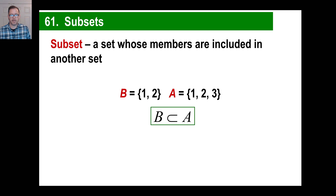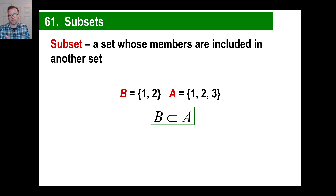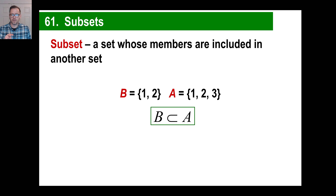So now we can say B is a subset of A. In other words, the members of set B are a subset of the members of set A. So it wouldn't be reversed — A wouldn't be a subset of B because A has more members than B.